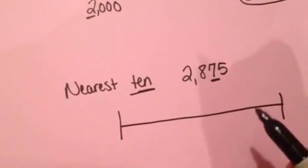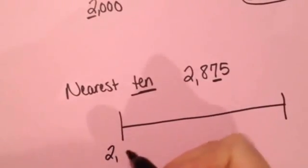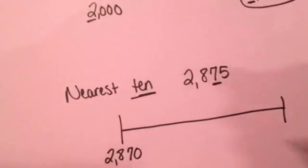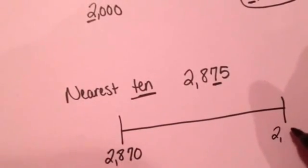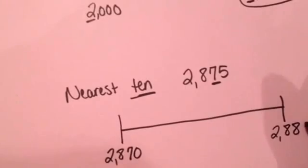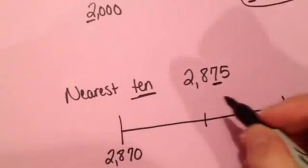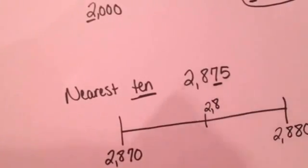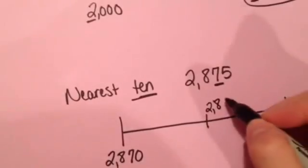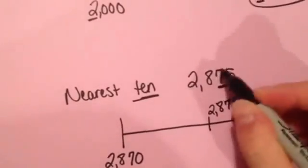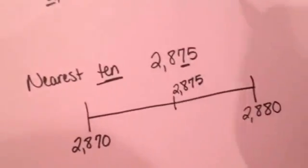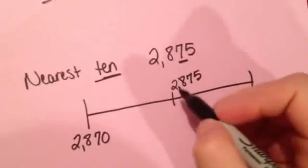So that means that this is going to be $2,870. This is going to be $2,880. And in the very middle is going to be $2,875. What's halfway between $70 and $80? Well, it just so happens that in this case, my number is exactly in the middle.